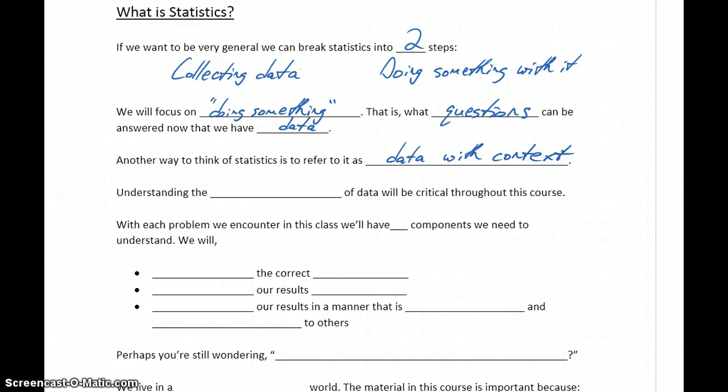Data on its own is just a bunch of numbers. A bunch of numbers don't mean anything until we start applying some context to it, or recognize that those numbers have meaning in the context that they came from. Understanding the context of data is going to be a critical component throughout this course.